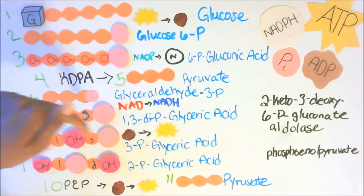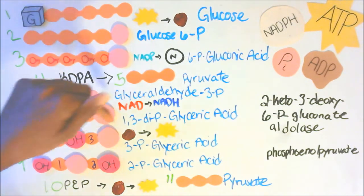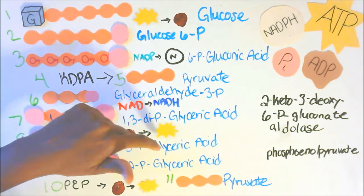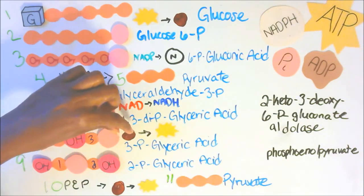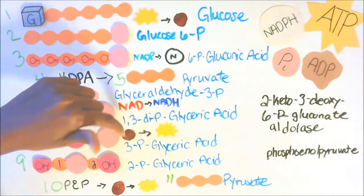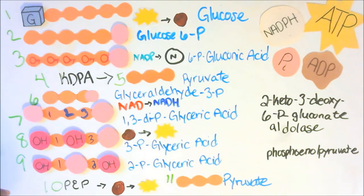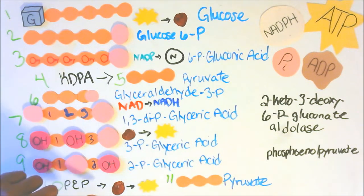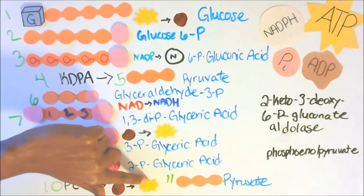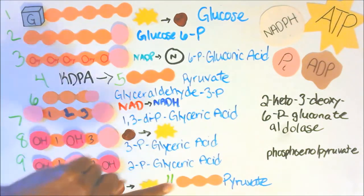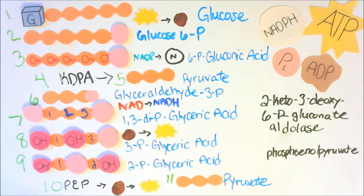Between molecules 7 and 8 — 1,3-di-P glyceric acid and 3P glyceric acid — ADP turns into ATP, shown with the brown ADP and yellow star ATP. Our last reaction is between PEP and pyruvate, where ADP turns into ATP. Those are all the reactions between the molecules.